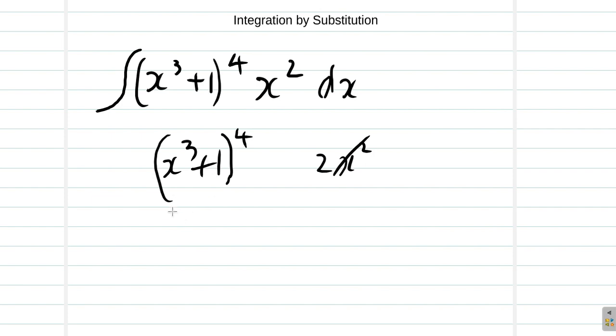Now, we're going to make u be equal to x cubed plus 1. So this will be u to the power of 4. Now, du by dx would be 3x squared.